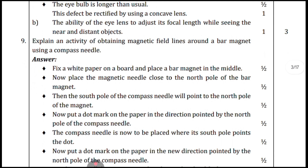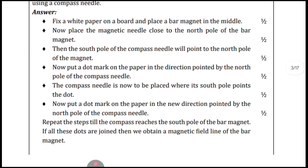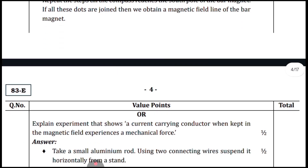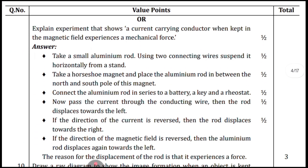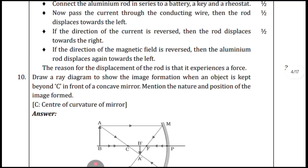Explain an activity of obtaining magnetic field lines around a bar magnet using a compass needle — here are the points. The next question is: explain an experiment that shows a current-carrying conductor, when kept in a magnetic field, experiences a mechanical force. Here are the points for that.